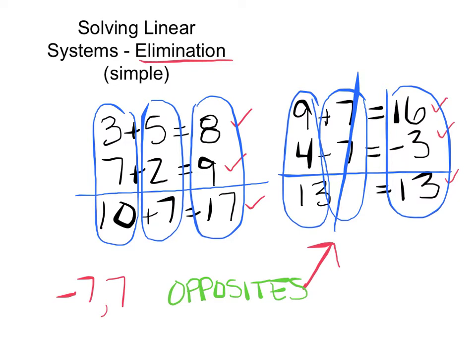Opposites: 7 and negative 7. Now let's think about opposites in terms of things with variables. If I had 2x, what's the opposite of 2x? The opposite is negative 2x. So our goal today, when solving with elimination, is to be looking for opposites. If we don't have opposites, we're going to make opposites — that's what we need in order to make things cancel out so we can solve our system.